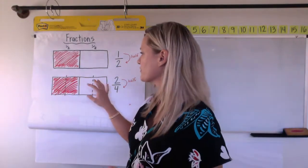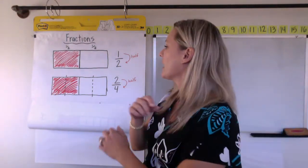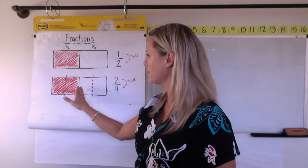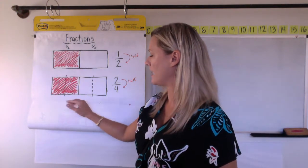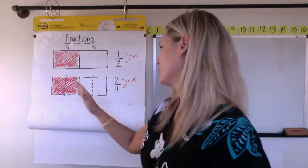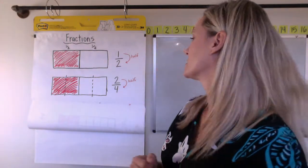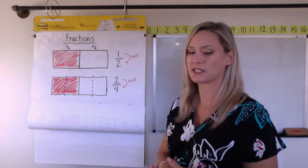Then down here, we drew another rectangle. Remember, you probably did that on your boards with me. And we broke it in half and colored in half again, but then we broke it into fourths. We split this side and this side. So we had four equal size pieces. So we named this one two fourths.